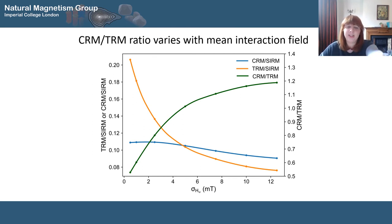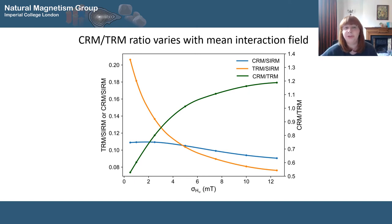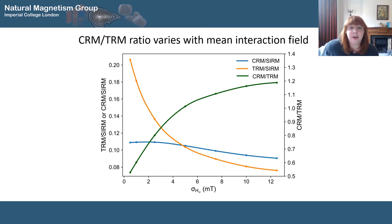The decrease in CRM intensity with interactions is significantly less than the decrease in TRM. This is because the volumes are smaller during blocking, so the interactions experienced are less. We've made a lot of comparisons to TRMs using the TRM Preisach model.